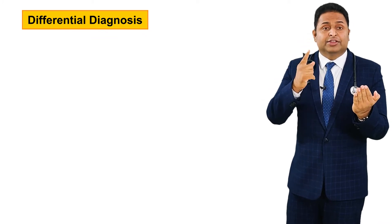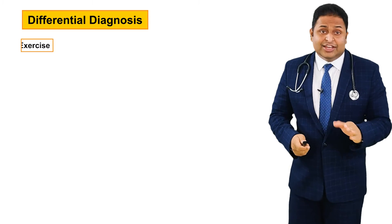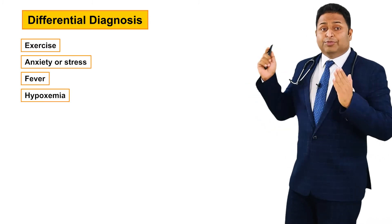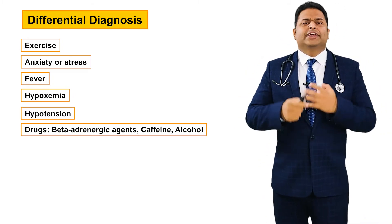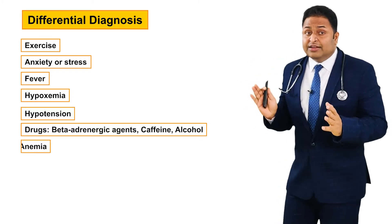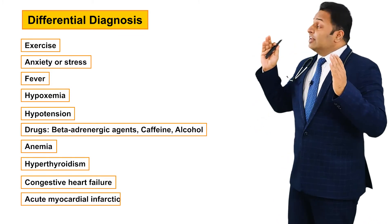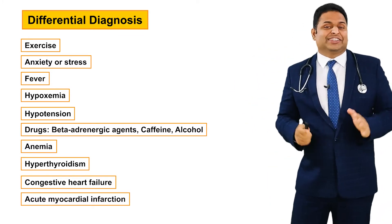When you see a strip of sinus tachycardia, what are the differential diagnoses? It could be due to exercise, anxiety or stress, fever, hypoxemia, hypertension, drugs like beta-adrenergic agents, caffeine, alcohol, or anticholinergic drugs, anemia, hyperthyroidism, congestive heart failure, acute myocardial infarction, or anything which stimulates sympathetic activity.